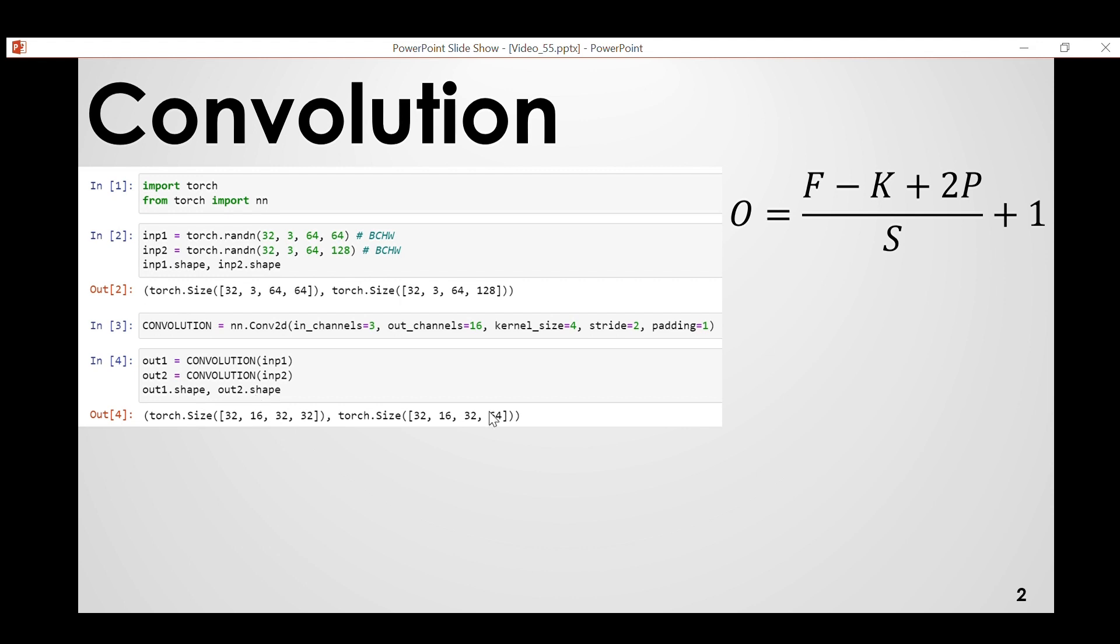The shape of the output looks like this, it is in the NCHW format: batch size, number of channels, this is height and width. The last two are basically the pixel dimension of the image. In case of input 2 I just changed the width. So for the first input the pixel dimension is same, but in the second input the pixel dimensions are different. Then I created a convolutional layer where input channels is 3, output channels will be 16, kernel 4, stride 2 and padding 1.